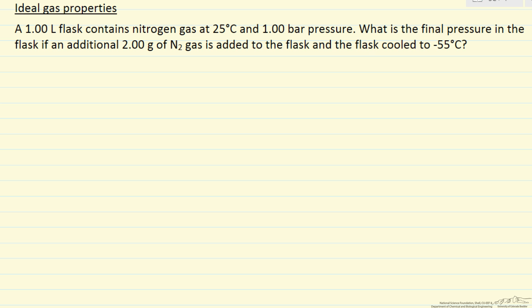The problem says we have a one liter flask that has nitrogen and we're given the temperature and the pressure. Then we're going to add two more grams of nitrogen to this flask, cool it to minus 55 degrees and we want to determine the final pressure.